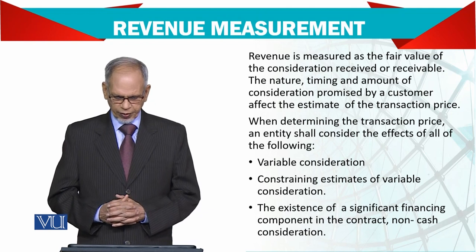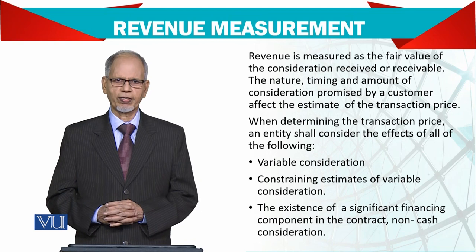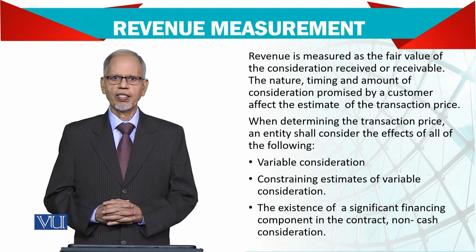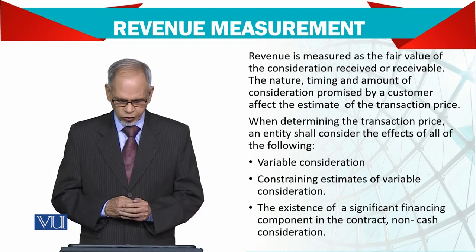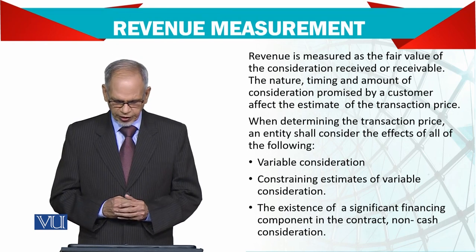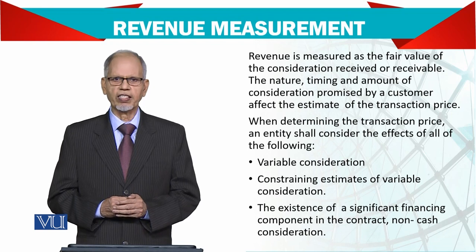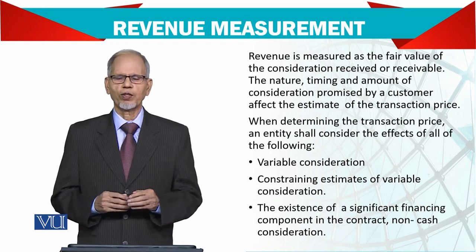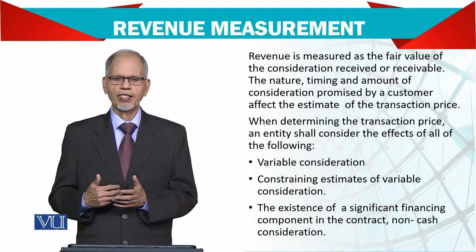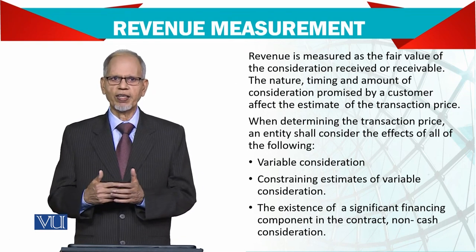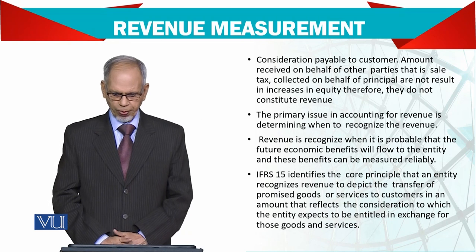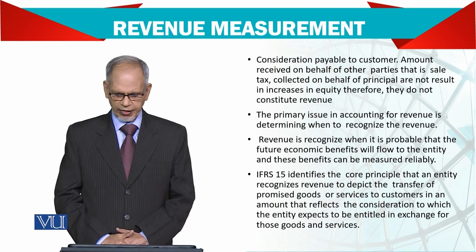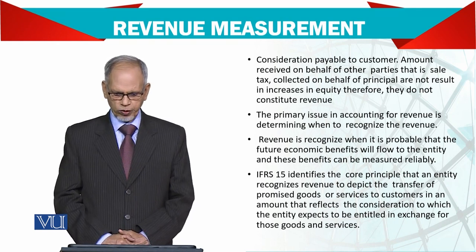When determining the transaction price, an entity shall consider: variable consideration — whether it is a one-time payment or paid in installments; constraining estimates of variable consideration; the existence of significant financing components in the contract; and non-cash consideration. For example, if payment comes in installments over 3-4 periods, you should consider the present value of that money. Amounts collected on behalf of other parties, such as sales tax collected on behalf of the government, do not constitute revenue as they do not result in an increase in equity.